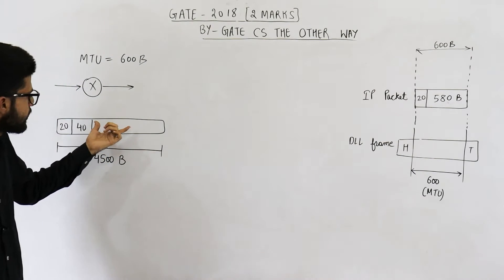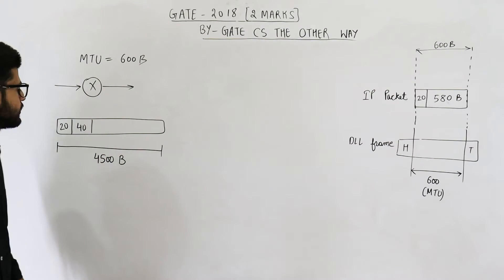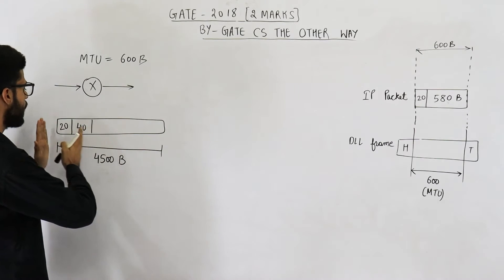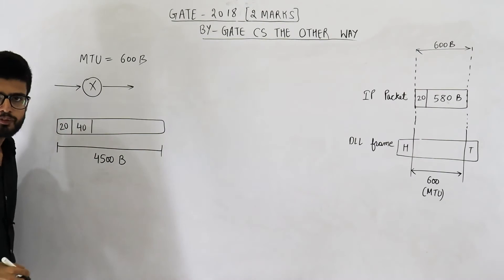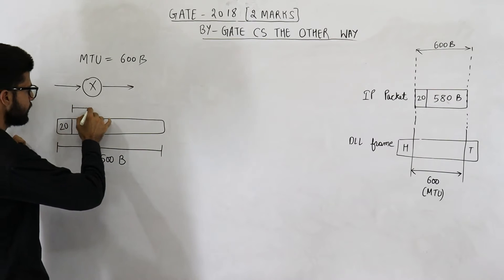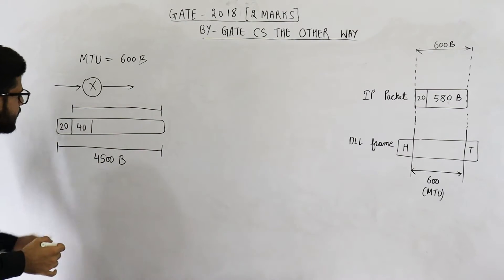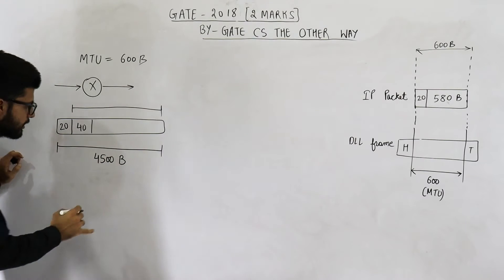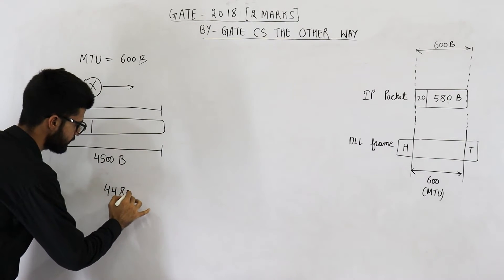How much data is there in the packet that the router has received? 4500 bytes is the total size, out of which the IP header is 20 bytes. For the IP layer, everything else will be treated as data. So the data is 4500 minus 20, which is 4480 bytes.